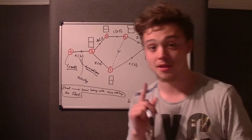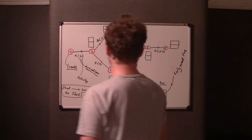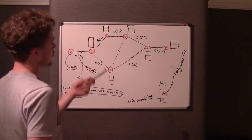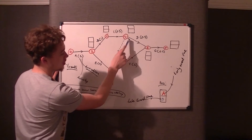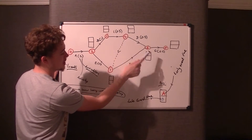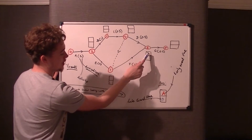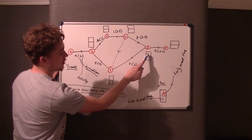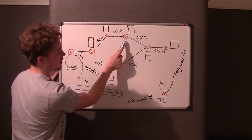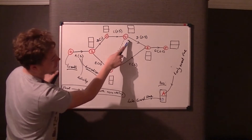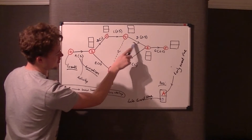The critical path — we're building up to this. A critical event is where you have one activity where the numbers in the Late and Early Event Times for both of the nodes are the same. So this activity D — we're looking at nodes four and five.